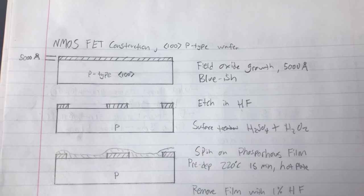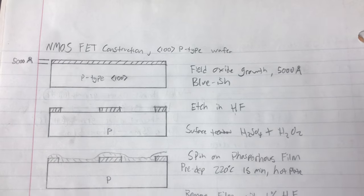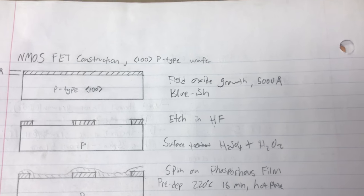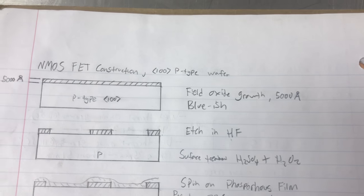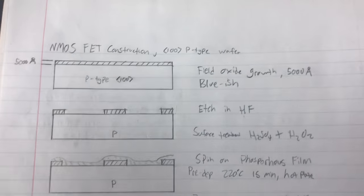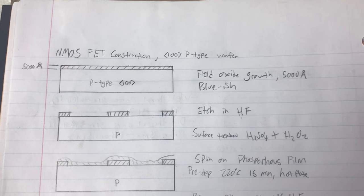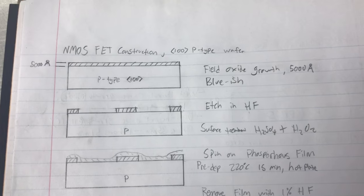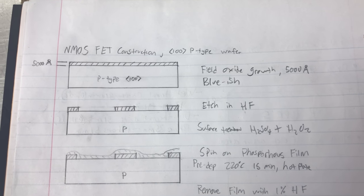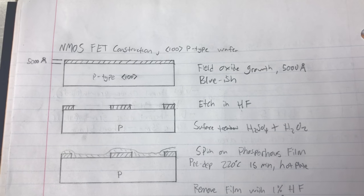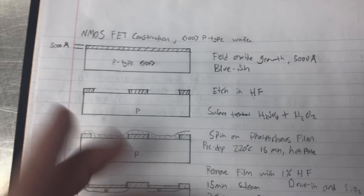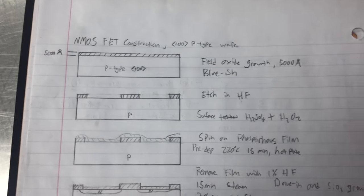So, we grow that field oxide. It can take about two hours to do so, and you'll know you've gotten to the right thickness when it's a blue-ish color. You can look up online. There's silicon dioxide color charts, and it'll tell you the color versus the thickness. The color is due to thin film interference, and the color pattern repeats itself.